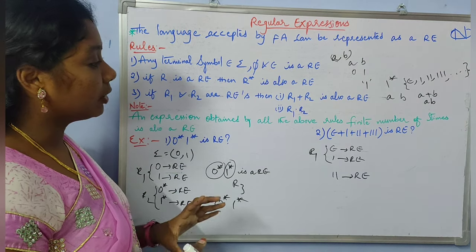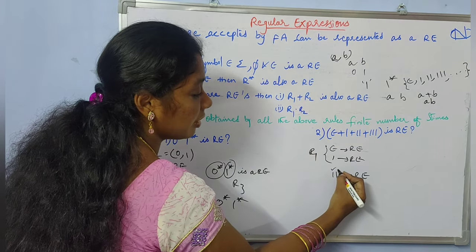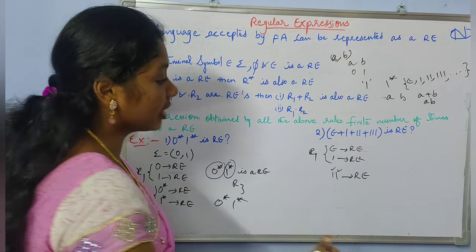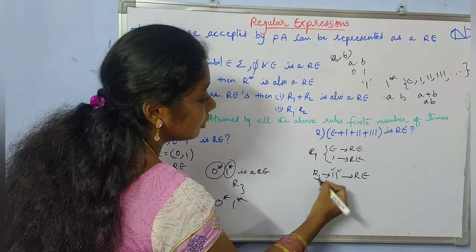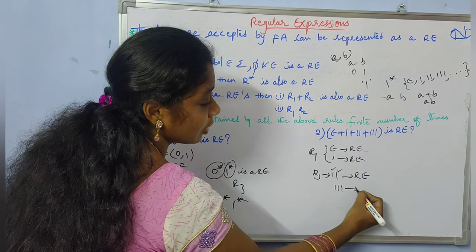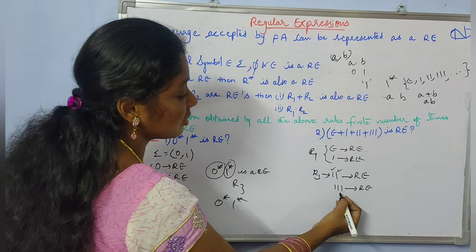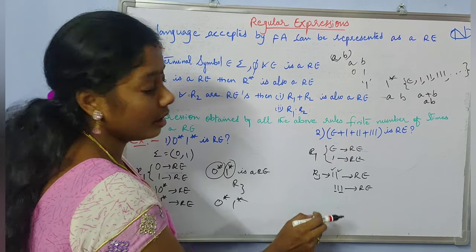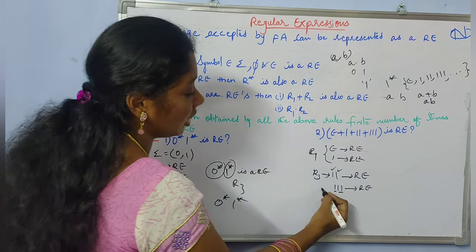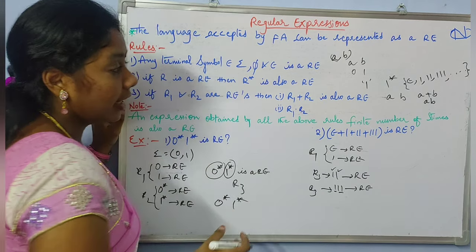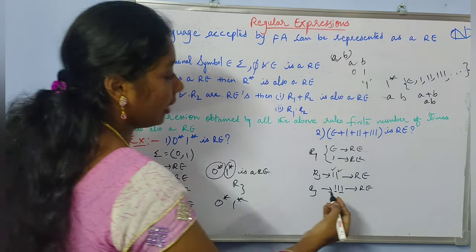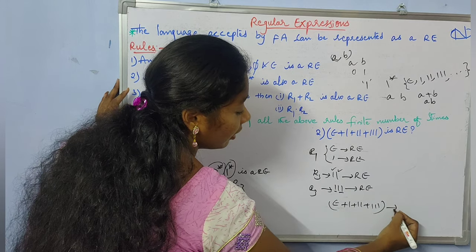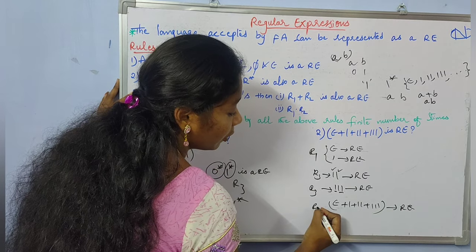Why is 11 a regular expression? Because 1 is a regular expression and another 1 is also a regular expression, and from rule 3, the concatenation of two regular expressions is also a regular expression. So 11 is from rule 3. Similarly, I can say that 111 is also a regular expression, because 1 is a regular expression and 11 is a regular expression, and from rule 3, their concatenation 111 is also a regular expression. And again, I can also say that epsilon + 1 + 11 + 111 is also a regular expression from rule 3.